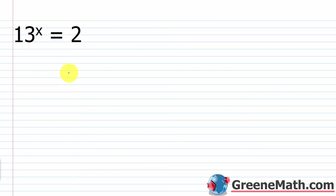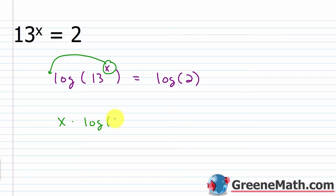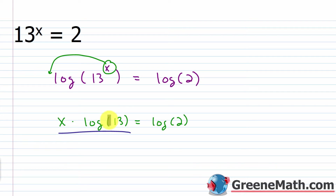So to solve this, I'm going to take the log of both sides. So I'm going to say this is log of 13 to the power of x is equal to log of 2. This allows me to take the exponent and bring it down, so I'll have x times log of 13 is equal to log of 2. And I can divide both sides of the equation by what's multiplying x, which is log of 13.